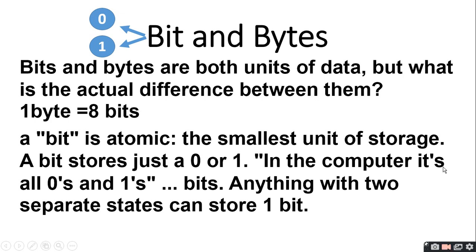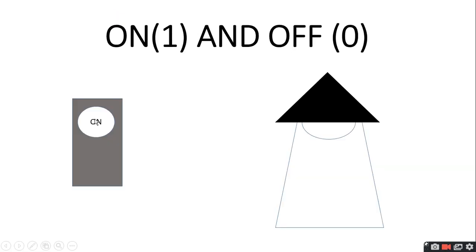In the computer, it's all 0s and 1s — bits. Any thing which has two separate states can store in 1 bit. Jo bhi cheez mein do separate states hon, woh bit mein store ho jaegi — chahe on ho, chahe off ho. Jis ko hum is tarah represent kar sakte hain: jab hum on dabate hain to light on ho jati hai, aur jab hum off dabate hain to light off hoti hai. So, on means 1 and off means 0.